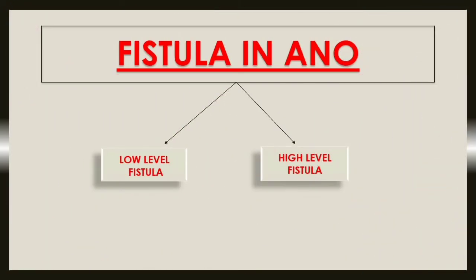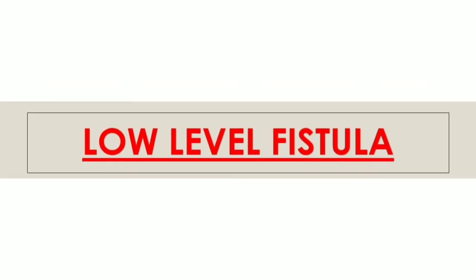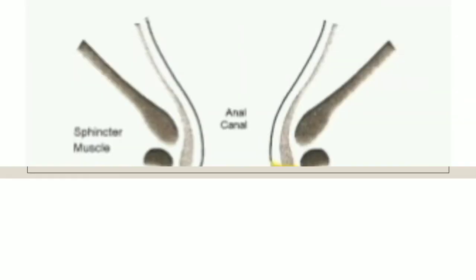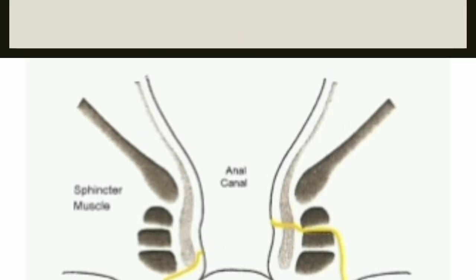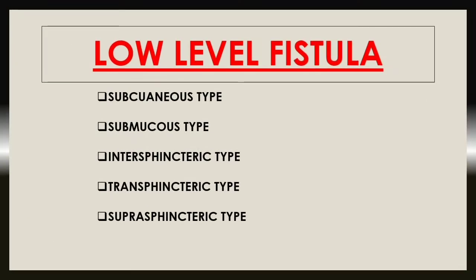Moving forward to classification. Fistula in Ano is usually divided into two types: low level fistula and high level fistula. Low level fistulas usually open into the anal canal below the anorectal line, and are subdivided into five types: subcutaneous type, submucous type, intersphincteric type, transsphincteric type, and suprasphincteric type.